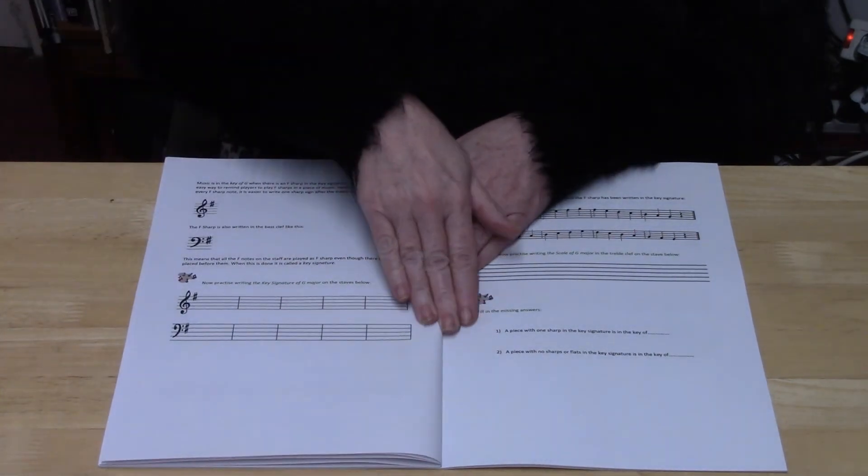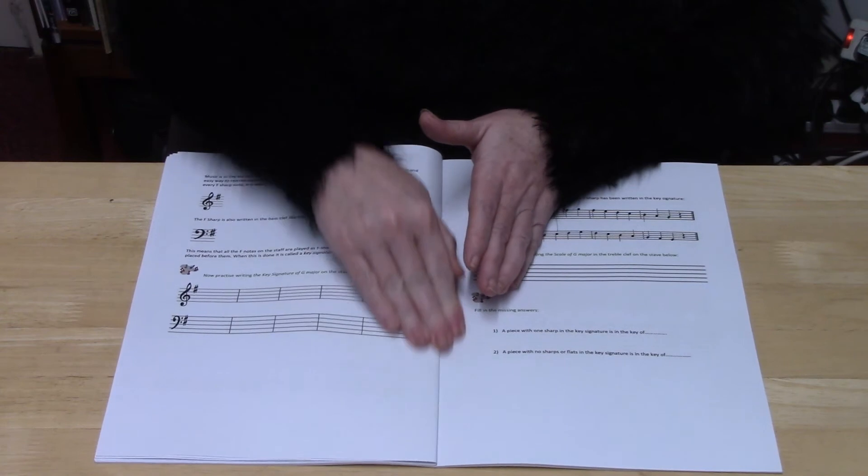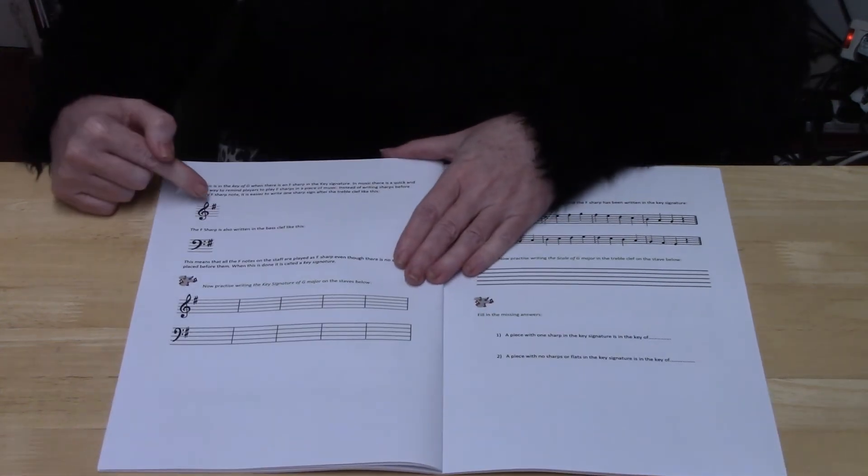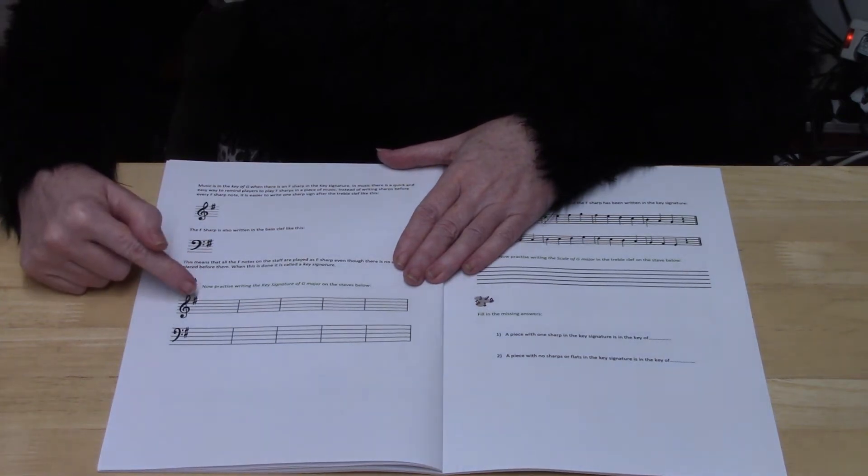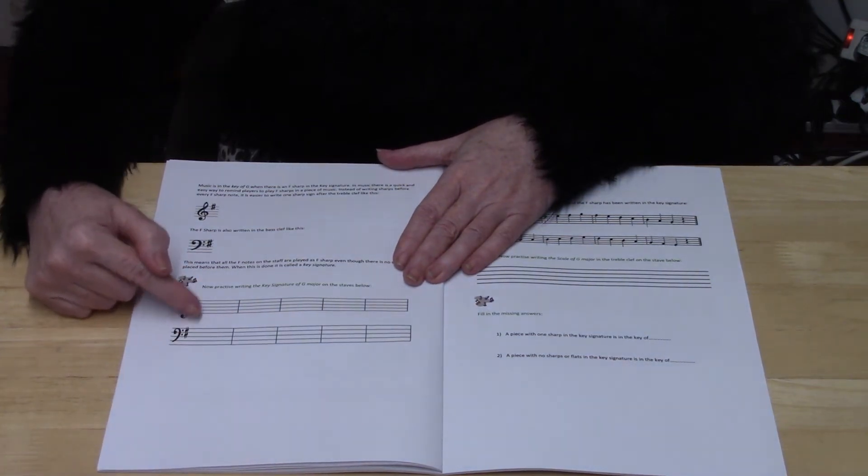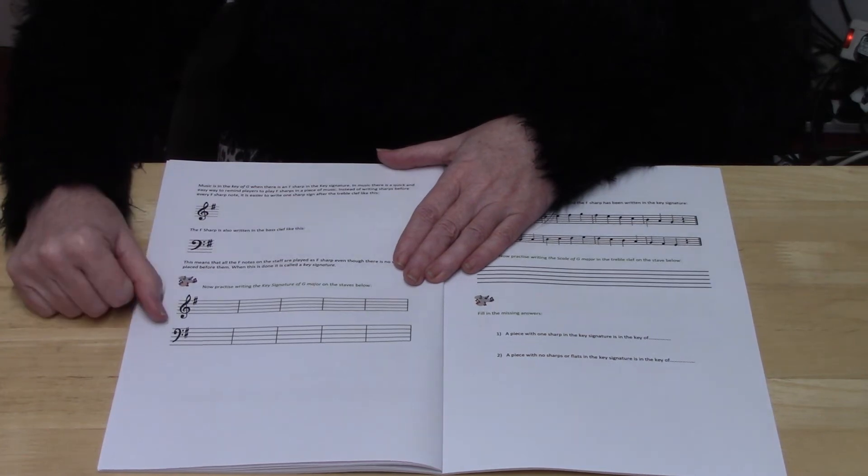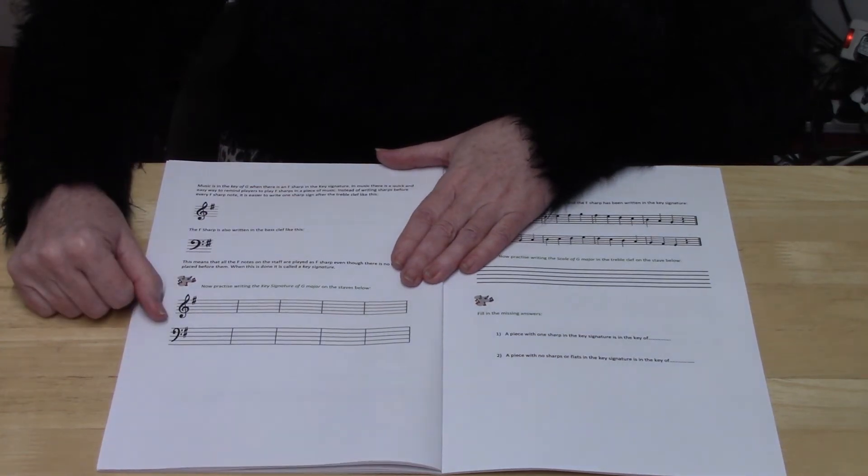But when you go over to the key of G major you will notice that it's got an F sharp in its key signature. And so straight away you'll know the piece is in the key of G because it has an F sharp in the key signature.